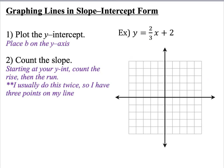Now let's try graphing a line in slope intercept form. So the first step in graphing a line is to place the y intercept. Well if we look here in our equation, y equals 2 thirds x plus 2, 2 is our y intercept. So I'm going to count up 1, 2 on our graph and place my point.